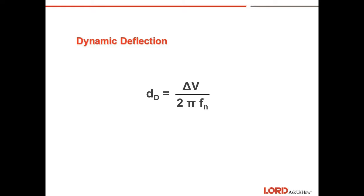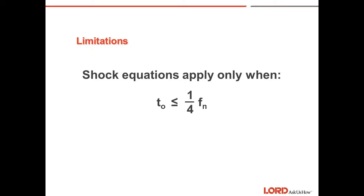Dynamic deflection: The dynamic deflection of the isolator under shock is the result of a transient phenomenon and is therefore a single-amplitude quantity. This should not be confused with dynamic displacement resulting from sine vibration, which is given in double amplitude. Dynamic deflection can be calculated by taking the change in velocity divided by 2 times pi times the natural frequency. Limitations of the shock equations apply only when the time domain is small compared to the period of the natural frequency of the system.